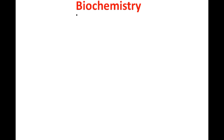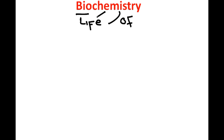So the first branch of chemistry we will discuss today is known as biochemistry. The word 'bio' is used for life, so this is the chemistry of life — it is called biochemistry. In this branch, we study chemistry that is related to life.